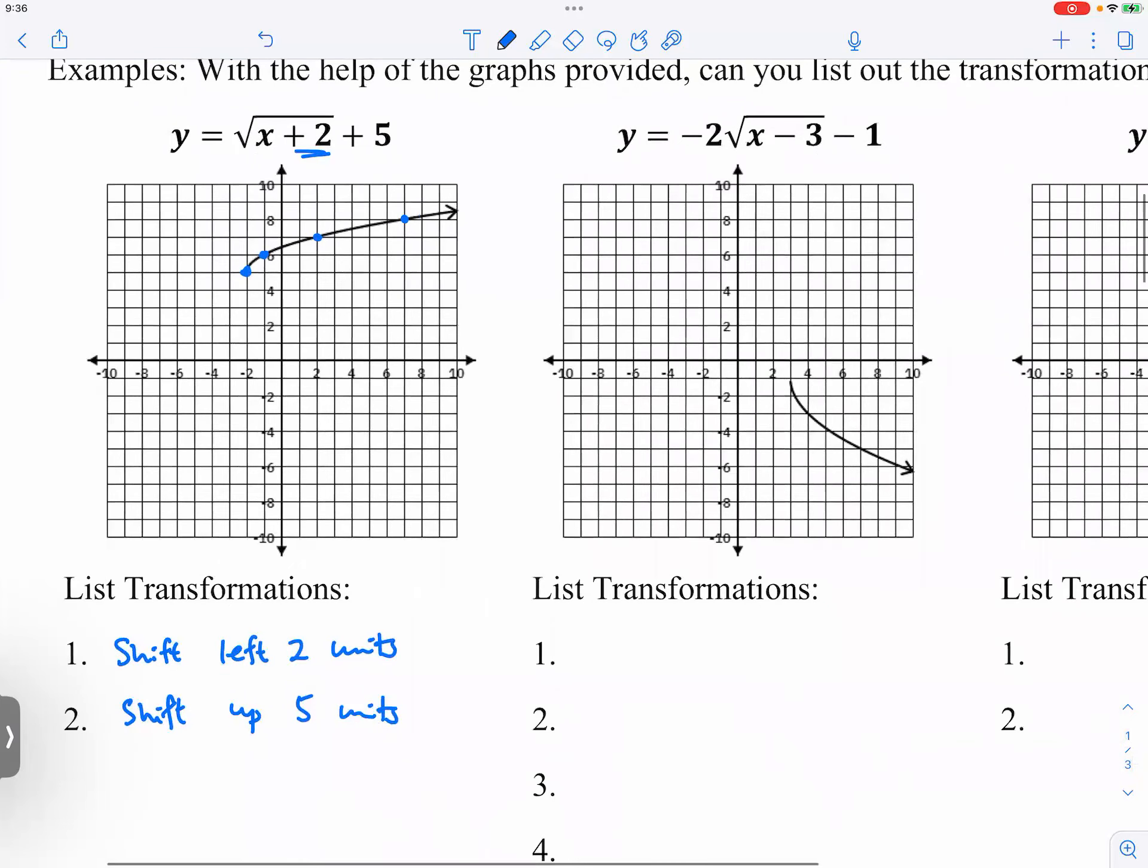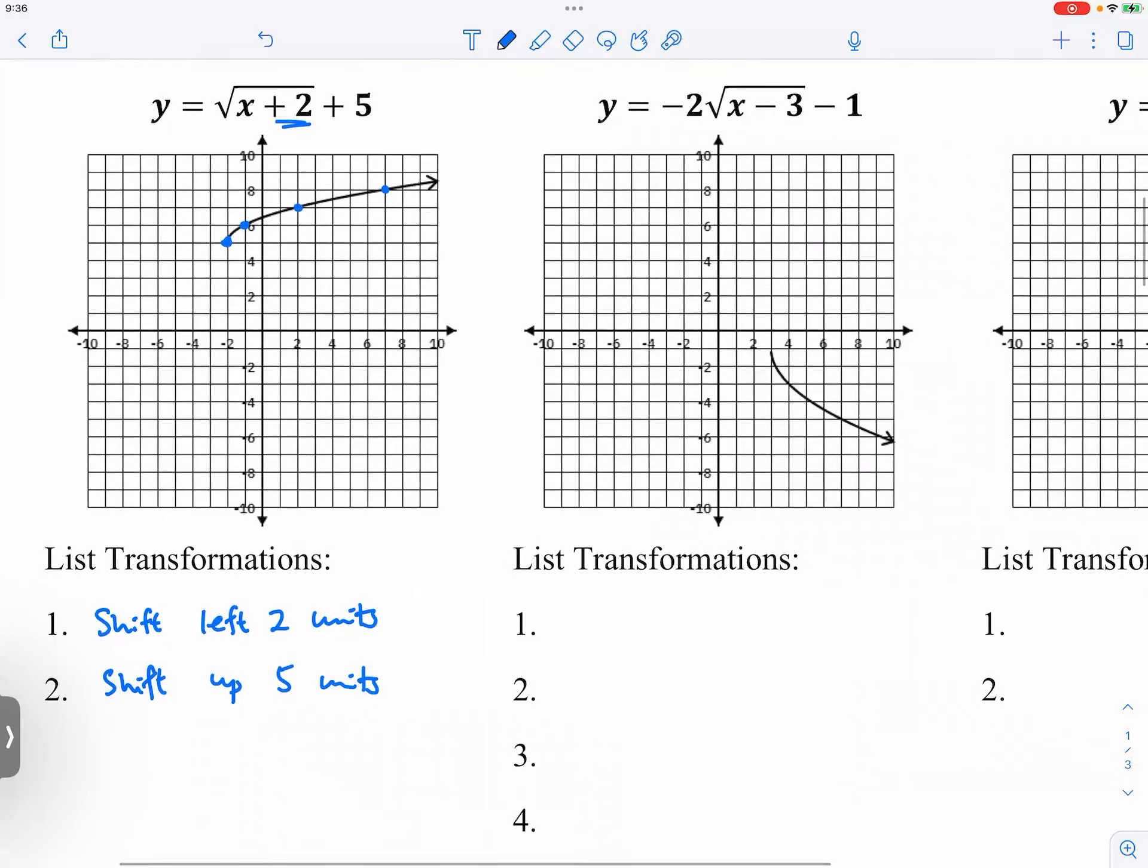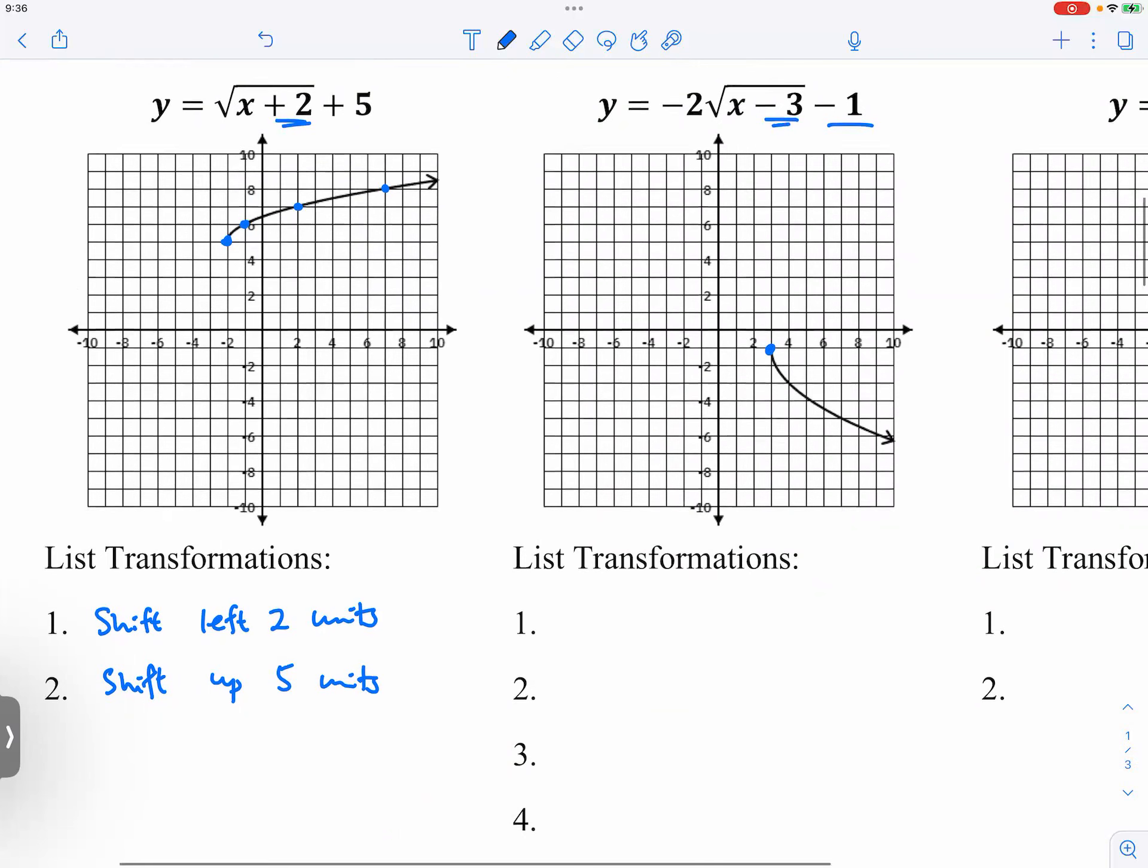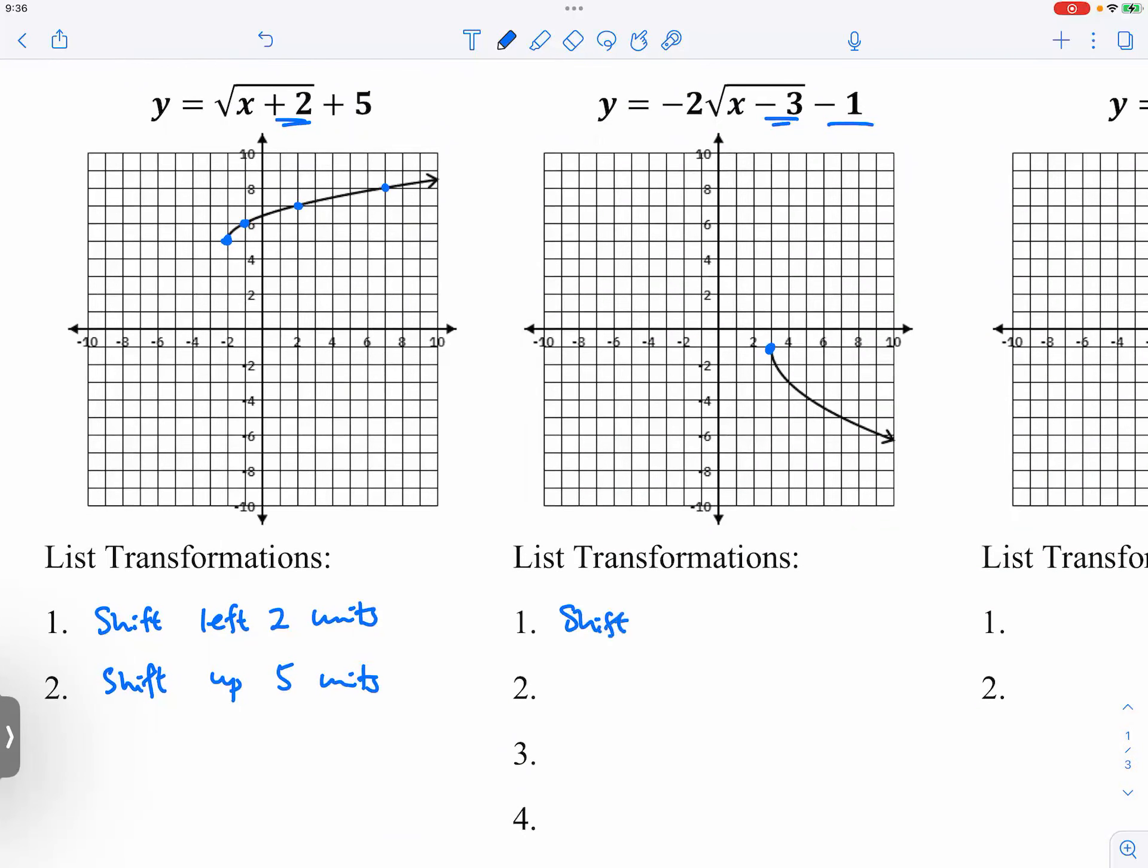And now let's take a look at the one next to it. The next one has a bit more stuff. We can tell that the starting point is going to be three comma negative one right here. We can say shift to the right three units.